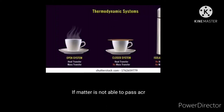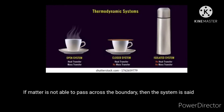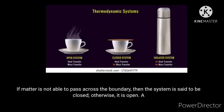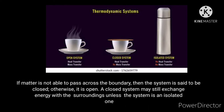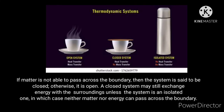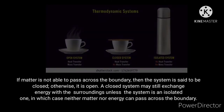If matter is not able to pass across the boundary, then the system is said to be closed. Otherwise, it is open. A closed system can exchange energy with the surroundings, unless the system is an isolated one, in which case neither matter nor energy can pass across the boundary.